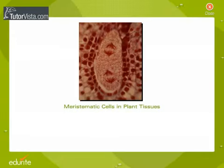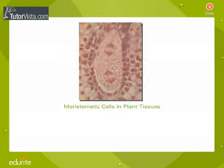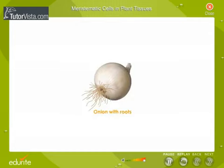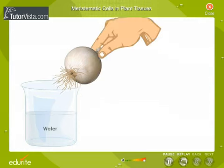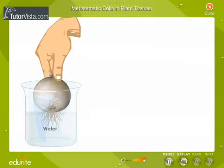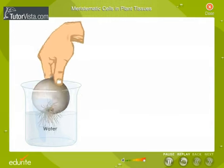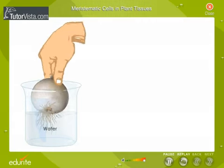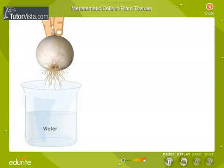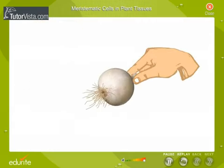Meristematic Cells in Plant Tissues. Take a fresh onion along with its roots. Wash the roots with water and cut a longitudinal section of the root tip.